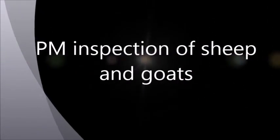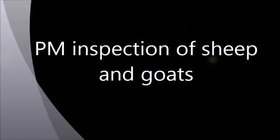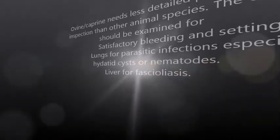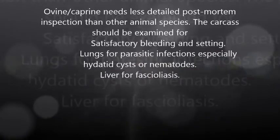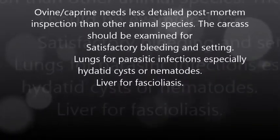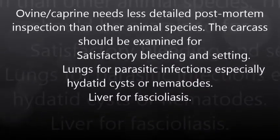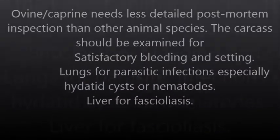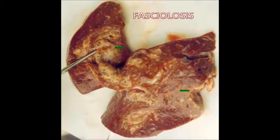Postmortem inspection of sheep and goats: Sheep and goats require less detailed postmortem inspection than other animal species. The carcass should be checked for satisfactory bleeding and setting. Lungs should be checked for parasitic infections and liver for fasciolosis.